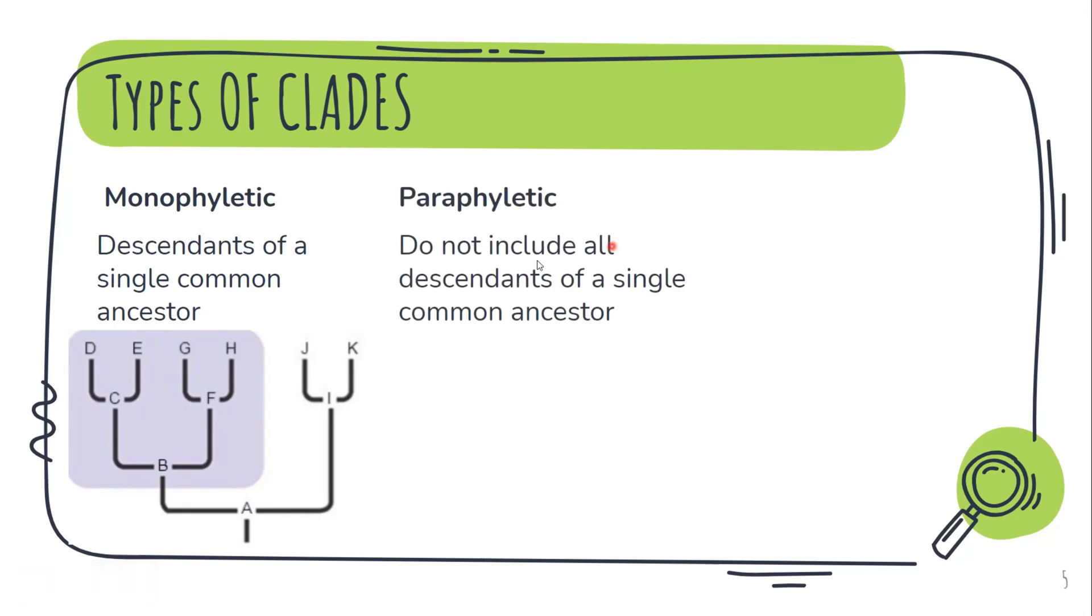Next paraphyletic. It does not include all the descendants of a single common ancestor. For example right here. Now A is the ancestor to both B and I and all of these are a descendant of A. However we are only using this part. So this doesn't include all the descendants and hence it is a paraphyletic clade.